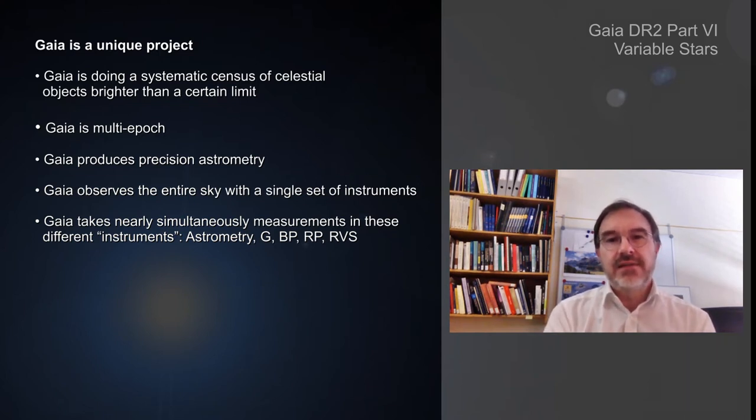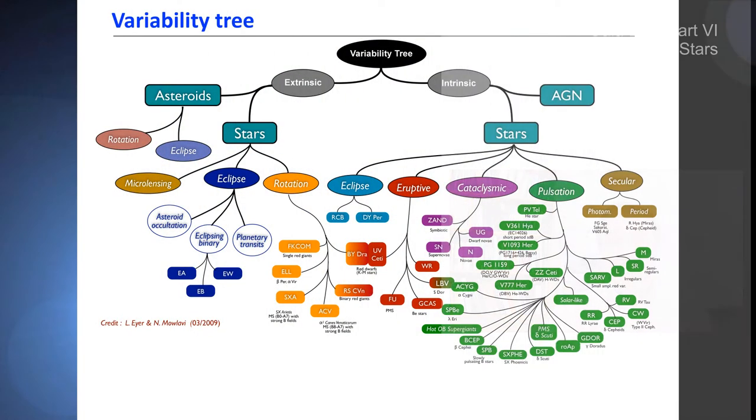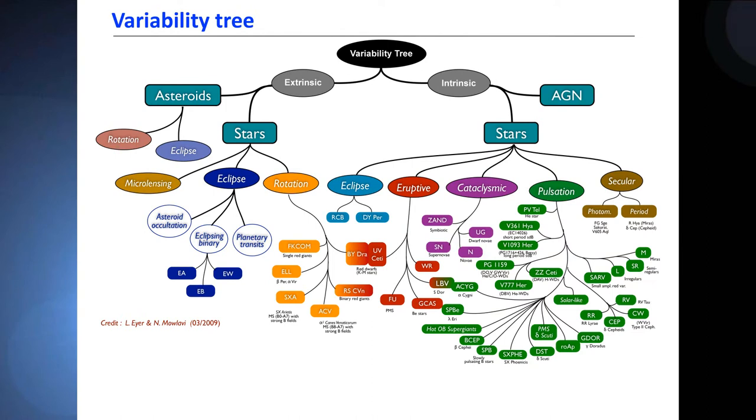By doing this census, a colleague was saying that Gaia is a kind of NSA of the galaxy. There is a real zoo of objects. The objects are varying for very different physical reasons.